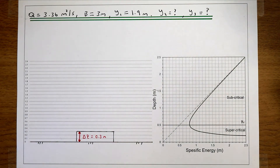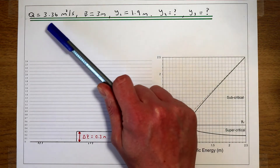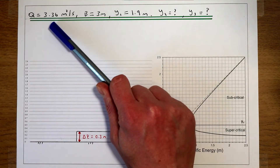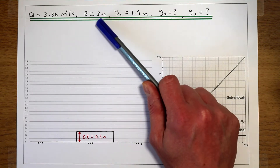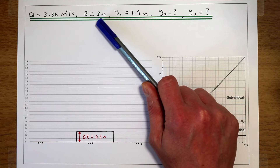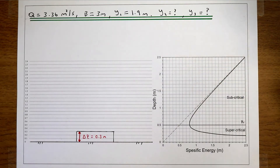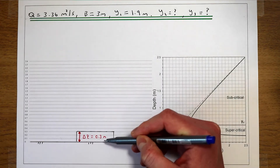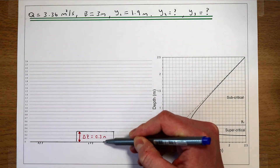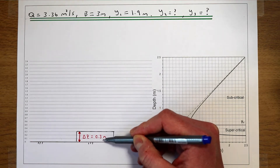In this video we've got a river that's flowing at 3.63 metres cubed per second. It's 3 metres wide and the flow depth is 1.9 metres. We're asking the question: what happens to the flow depth of the river if we put a bump in the river that's 0.3 metres high?